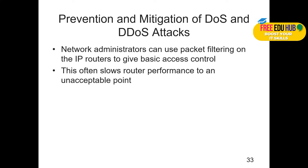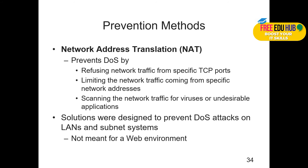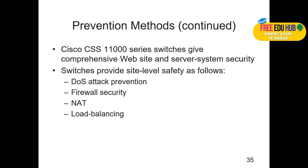Prevention and mitigation of DoS and DDoS attacks: network administrators can use packet filtering on IP routers to provide basic access control, though this often slows router performance to an unacceptable level. A second method is network address translation (NAT) to separate internal IP addresses from external ones. Other methods include refusing network traffic from specific TCP ports, limiting traffic from specific network addresses, and scanning network traffic for viruses.